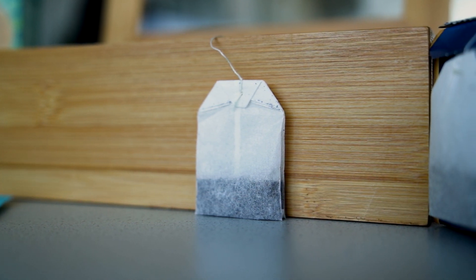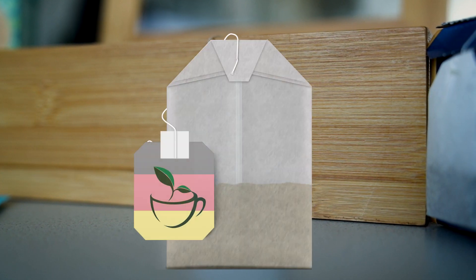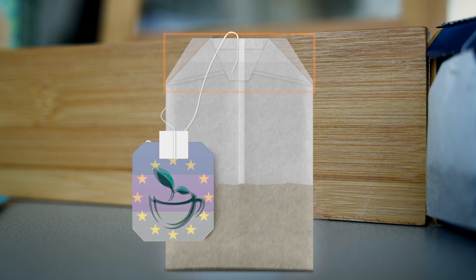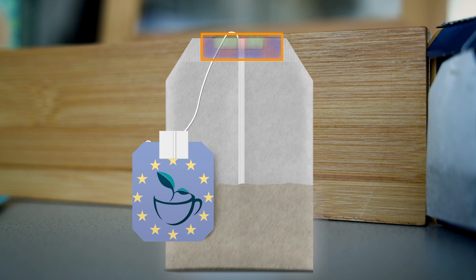Most tea bags sold in Germany are mainly made of cellulose. Here the bags are simply folded and closed at the top with a thread. However, in other countries, tea bags are sealed with a non-hazardous adhesive.